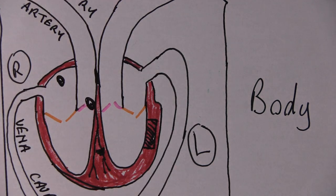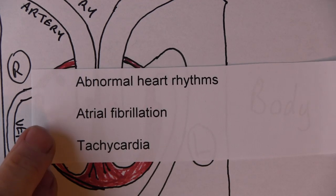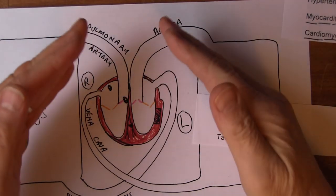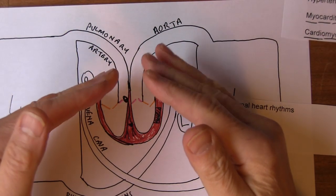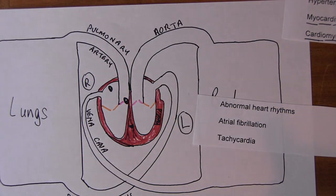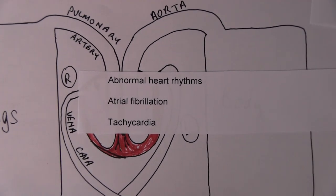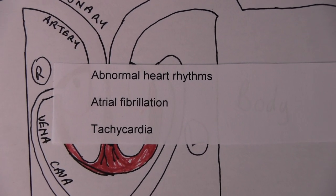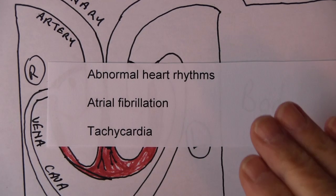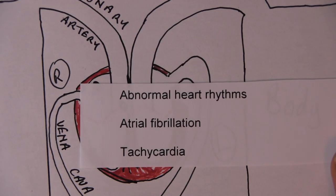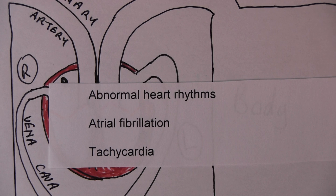Another cause is abnormal heart rhythms. Probably the most common is atrial fibrillation, where instead of an ordered atrial contraction the atria are fibrillating and we lose the atrial kick, making cardiac output less efficient. Tachydysrhythmias are another cause — the big problem is they don't allow time for the heart to fill during diastole, so it contracts again before adequate ventricular filling has occurred. Brady dysrhythmias can also reduce cardiac output, as cardiac output equals heart rate multiplied by stroke volume.